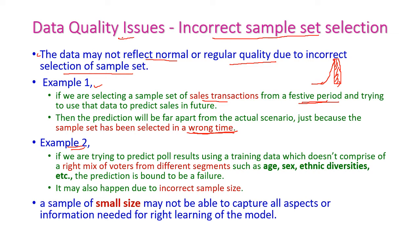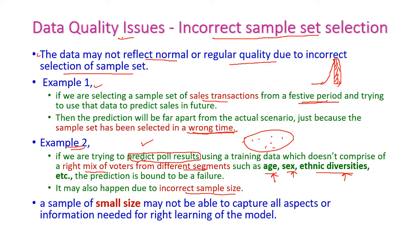The second example is predicting the poll result, that is the election result. In election result prediction, we have to select people from all of the population. A right mix of voters from different segments should be there, such as all age groups of people, both male and female, and ethnic diversities. All community people also have to be considered for taking samples; otherwise, it is called incorrect samples and we cannot predict the exact result of the election.